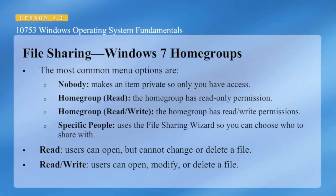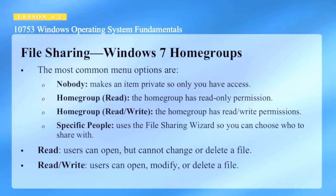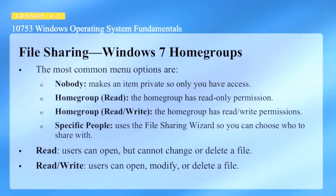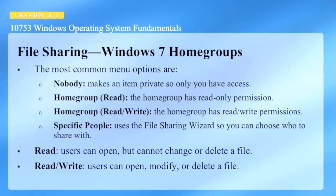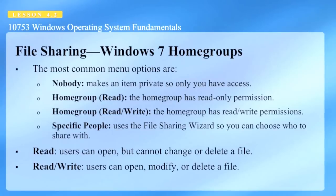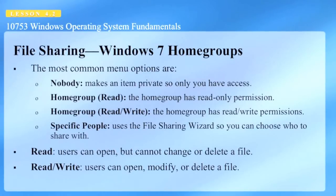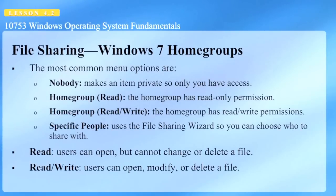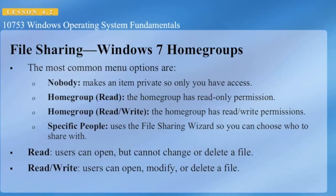The most common menu options for file sharing in Windows 7 home groups are: Nobody, which makes an item private so only you have access; Home Group Read, where the home group has read-only permission; Home Group Read/Write, where the home group has read and write permissions; and Specific People, which uses the file sharing wizard so you can choose who to share with. With Read, users can open but cannot change or delete a file. With Read/Write, users can open, modify, or delete a file.